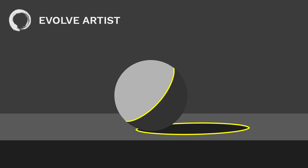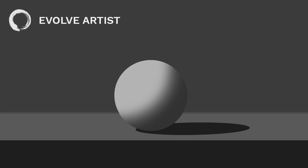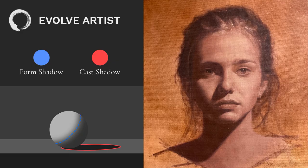What happens if we reverse this? Yikes. But who would make a mistake like this? Let's complicate it. Look at this portrait — look at how many form and cast shadows there are going on in this face. It's very important to be able to tell the difference between a form and a cast shadow.